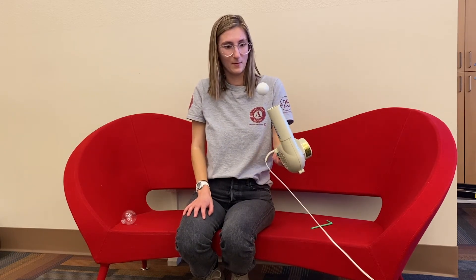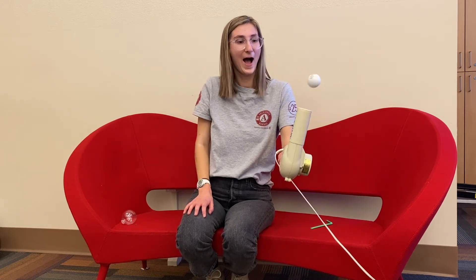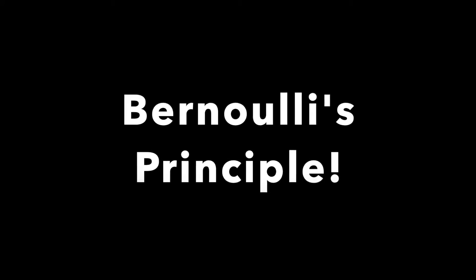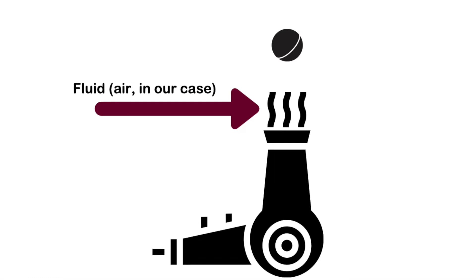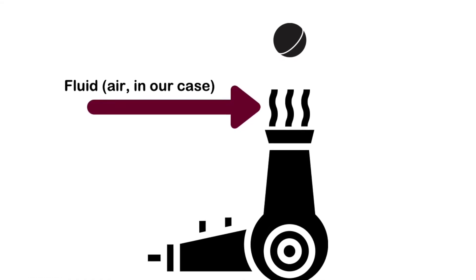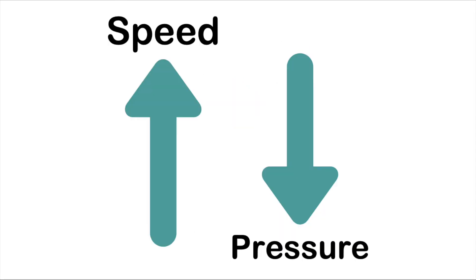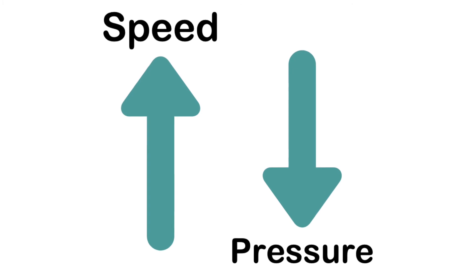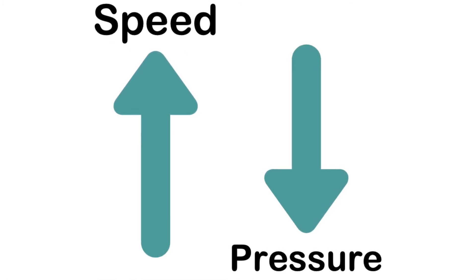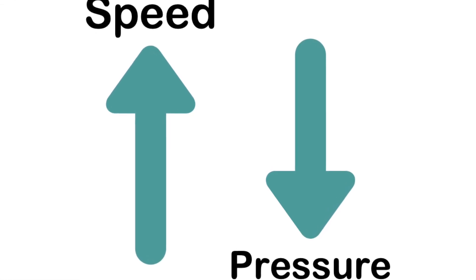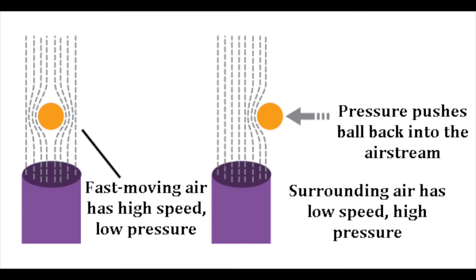So how come when I move my hairdryer side to side like this, the ping-pong ball doesn't fall off? This can be explained by Bernoulli's principle. Bernoulli's principle states that the speed of a fluid — which in this case is referring to the speed of the air coming out of the hairdryer — determines the amount of pressure a fluid can exert. Generally, this means as a fluid increases in speed, the pressure decreases. Objects naturally move from high-pressure situations to low-pressure situations, which causes the ping-pong ball to stay inside the airstream, which has a relatively low pressure compared to the still air around it that has a relatively higher pressure.